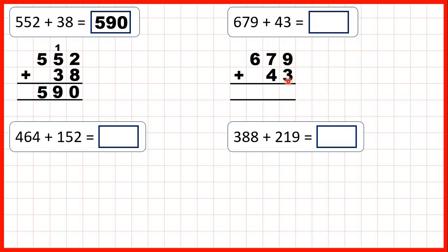9 plus 3 is 12, so that's 1, 2. Now, 1 plus 7 plus 4 is 12, so again that's 1, 2, with the first digit written above the next place value column along — here in our hundreds place value column. And now we have 1 plus 6 plus nothing, so that's 7, and that gives us 722.